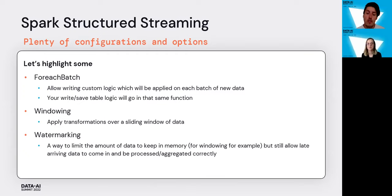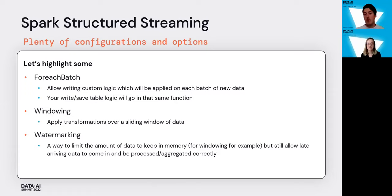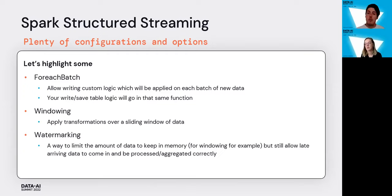Two other interesting configurations, especially when dealing with late-arriving data and aggregations, are windowing and watermarking. Windowing applies transformations over a sliding window — for example, grouping on 10-minute windows. Watermarking then allows you to define a cutoff, such as allowing data to be late by four minutes but not more, so that memory doesn't explode while still accommodating late-arriving data.